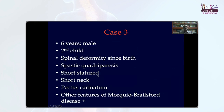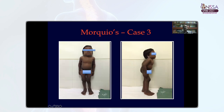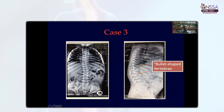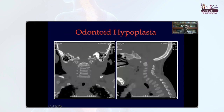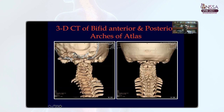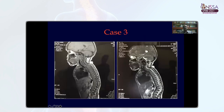The third case is a six-year-old male who presented with significant spinal deformities, spastic quadriparesis, short neck, and pectus carinatum. Practically there is no neck for this child. Significant pectus carinatum, exaggerated thoracic kyphosis, and other features of Morquio Disease are noted. The radiograph shows the classical bullet-shaped vertebrae, and the CT shows the bifid anterior and posterior arch of atlas — a bipartite atlas — with odontoid hypoplasia. There is also kyphosis at the cervicothoracic and thoracolumbar junction, which can become sites of compression as the child grows older. MRI showed significant compression at the cervicothoracic junction.